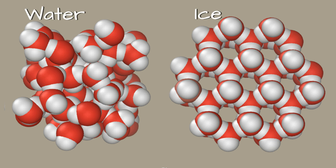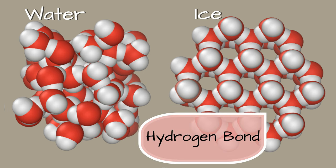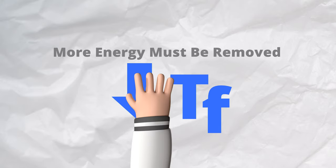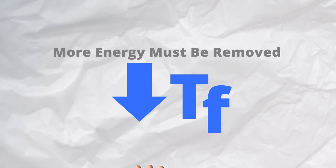In the case of water, the hydrogen bonds between the water molecules make the hexagonal-shaped network, which is the characteristic structure of ice. However, when a solute is added to water, this ordering process is interrupted. As a result, more energy must be removed from the solution to freeze it, and that lowers the freezing point of the solution.